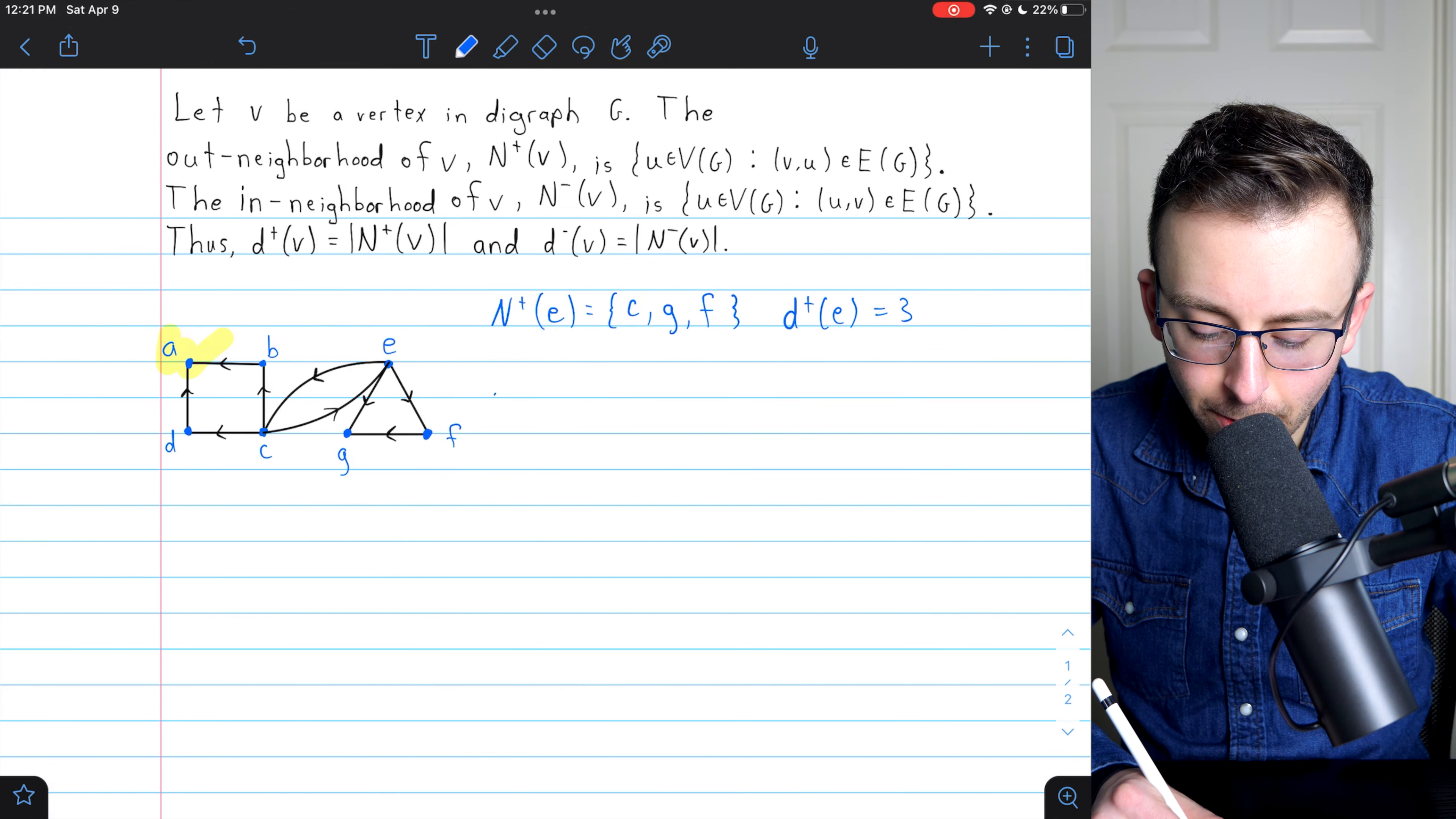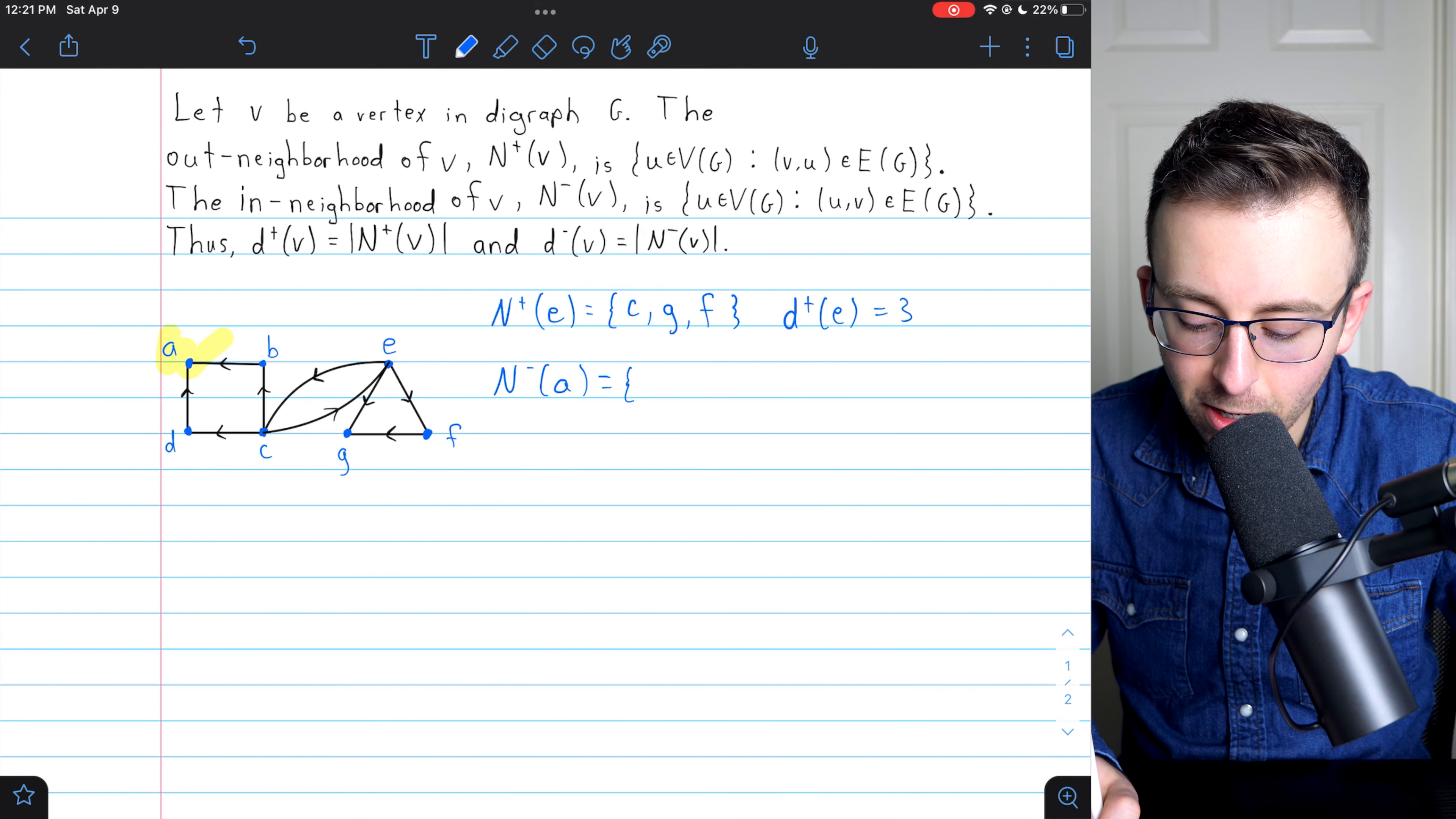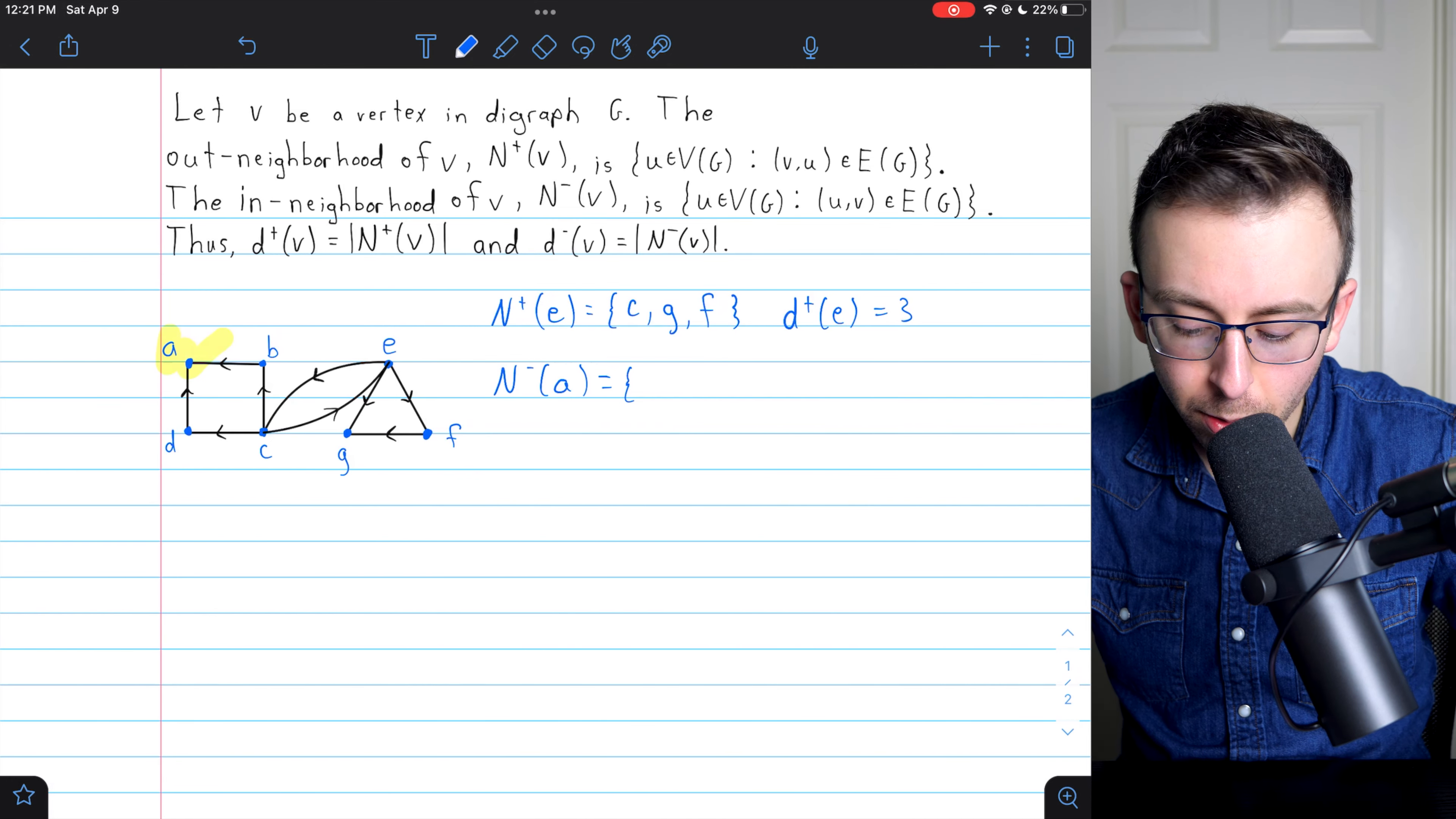So I'll just write this here, in-neighborhood of A. This is the set containing the vertices that are adjacent to A, the vertices going to A. What vertices are those?